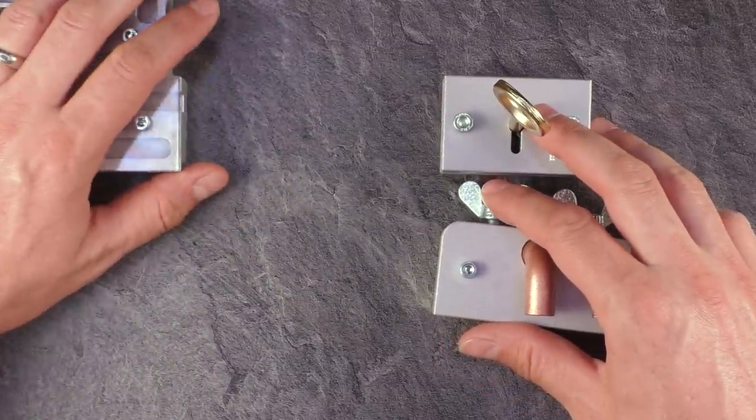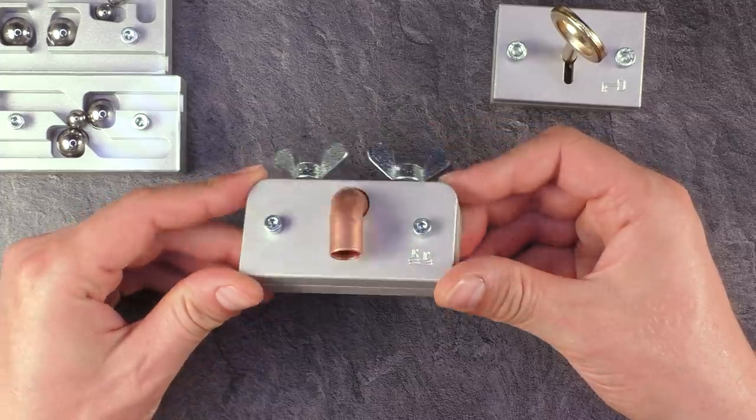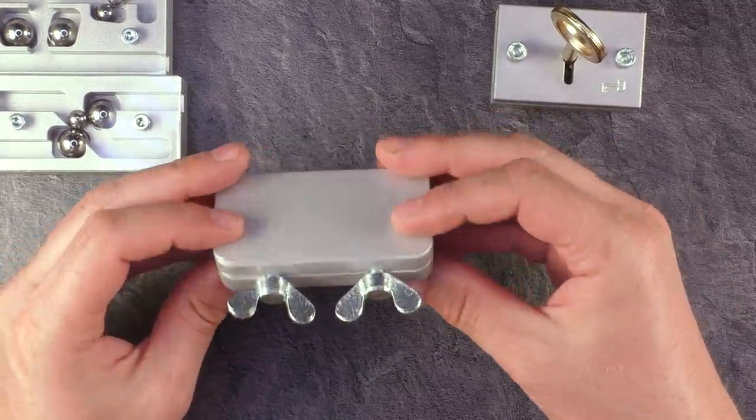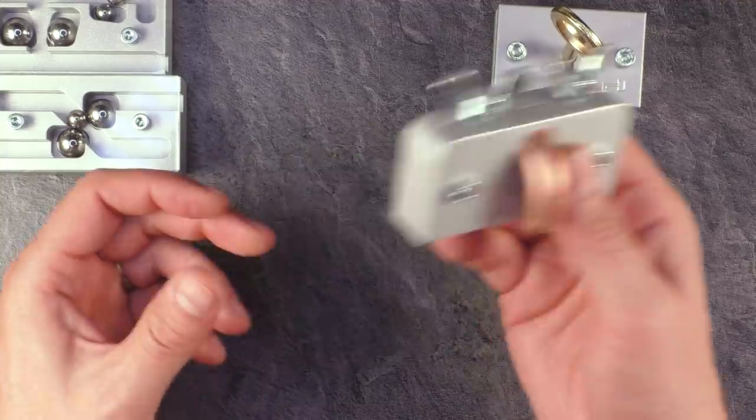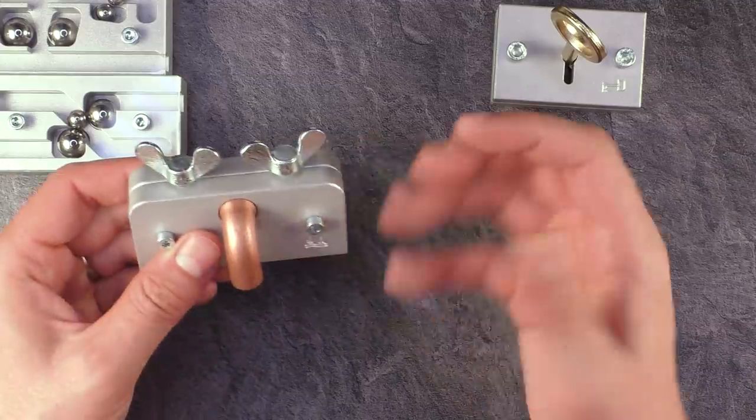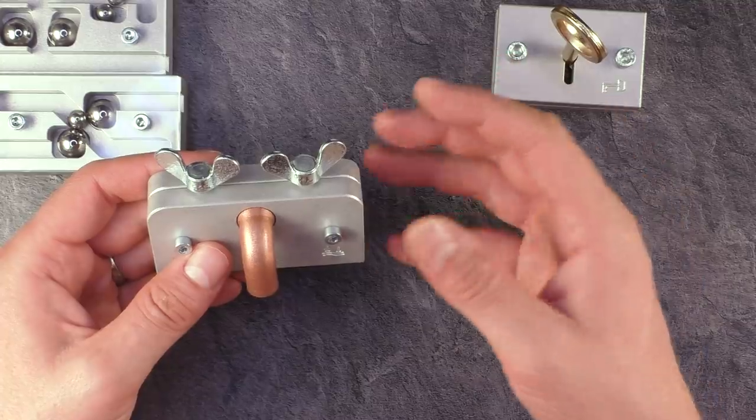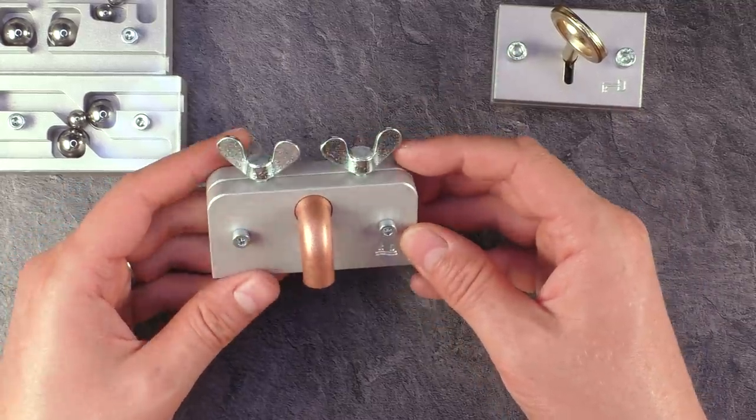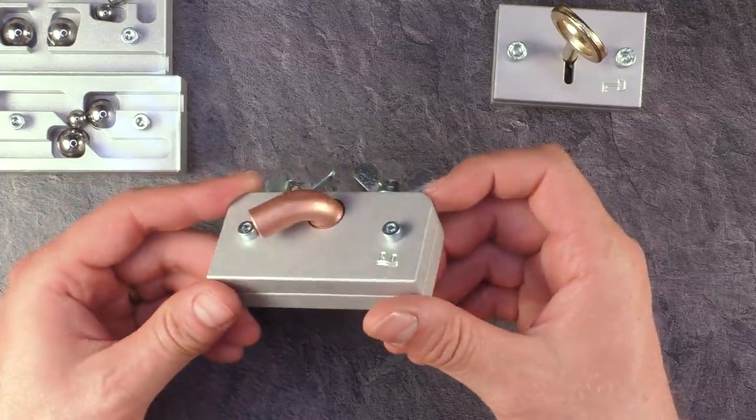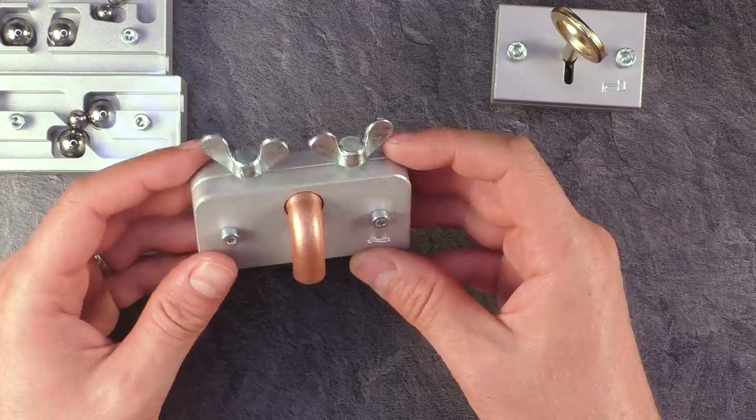And today's episode is about number three of these four puzzles, which is this so-called Wasserhahn, which is German and means water tap. It's again made fully out of metal. If I move it I can hear some noise from inside, so there's probably a steel ball inside. The task of this puzzle is you need to get a drop out of the water tap.